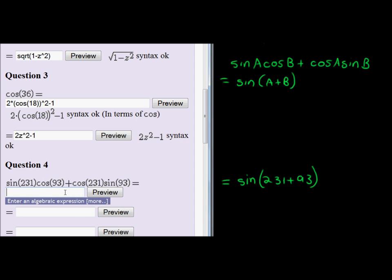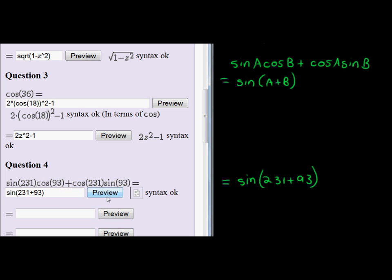And that's what we can type in here first. Next, sin(231 + 93). Cool. Let's just see. Syntax is okay. Cool.